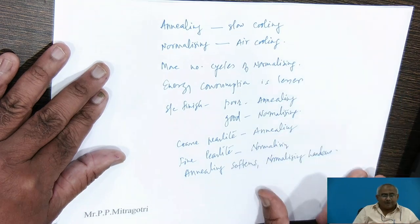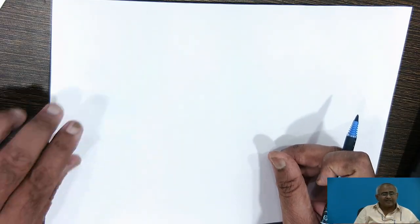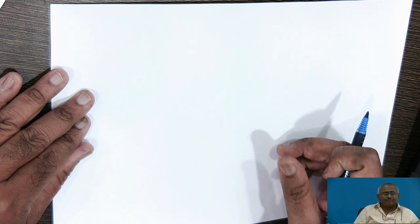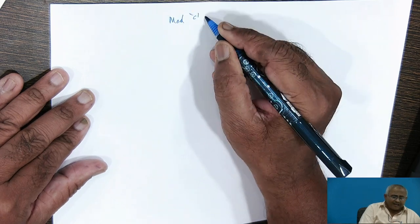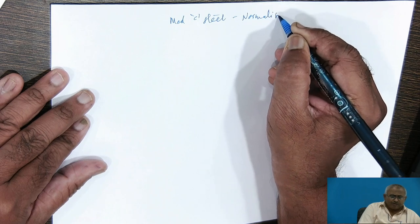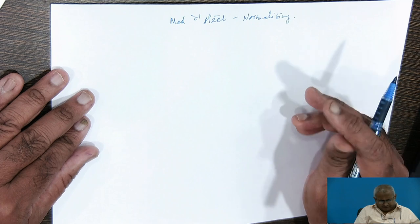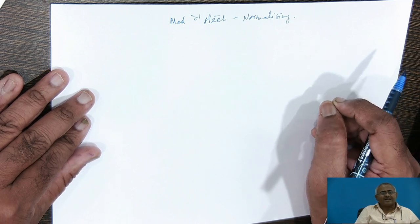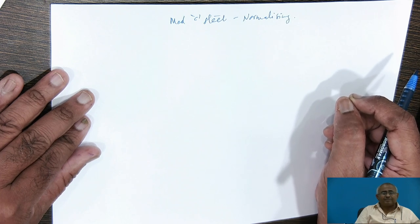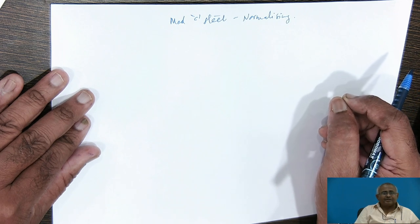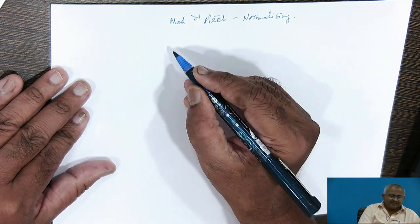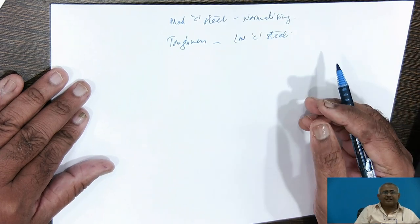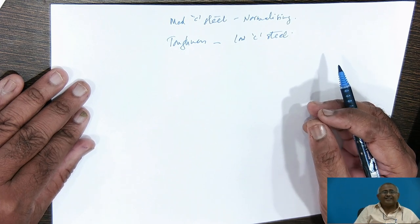To improve the machinability of hyper-eutectoid steels and tool steels we generally employ spheroidizing annealing. But for economy and for improving machinability of medium carbon steels we can apply normalizing, because normalizing also carries out globularization of pearlite, which improves machinability to a certain extent — though perhaps not to the same extent as annealing. After normalizing, the toughness obtained in low carbon steel is greater than what is obtained with annealing. However, in medium carbon steel it is always preferred to use annealing if better toughness is required.